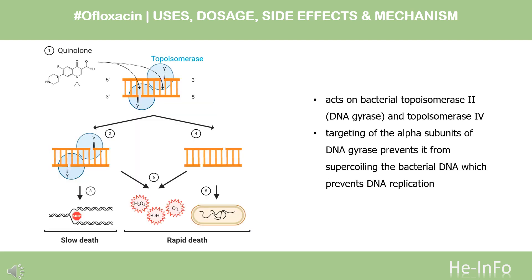Mechanism of Action. Ofloxacin acts on DNA gyrase and topoisomerase-4, enzymes which, like human topoisomerase, prevent the excessive supercoiling of DNA during replication or transcription. By inhibiting their function, the drug thereby inhibits normal cell division.